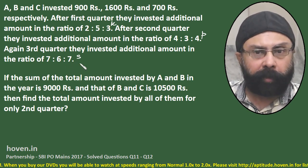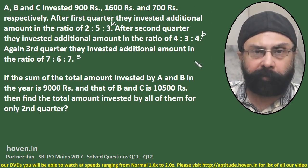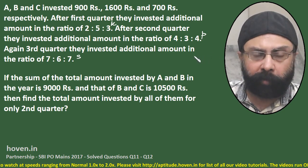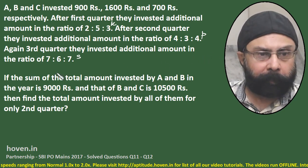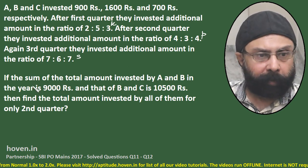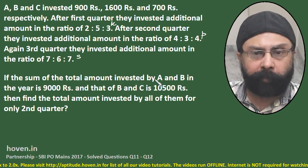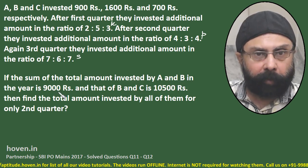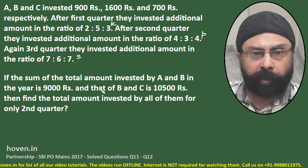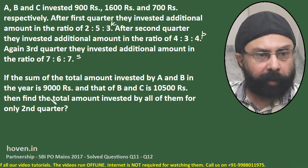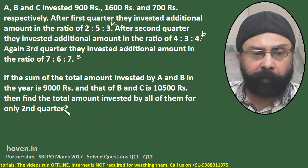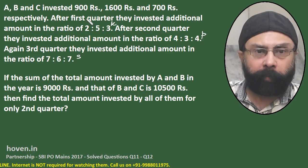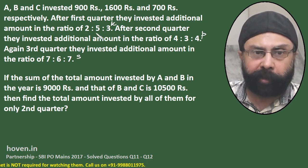Now there are two questions based on this data and we are taking the first question. The second question on the same data I will solve just after this one. If the sum of the total amount invested by A and B in the year is 9000, and B and C together is 10500, then find the total amount invested by all of them for only the second quarter.